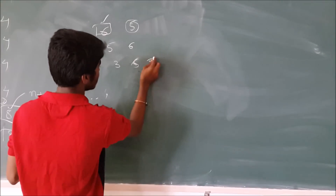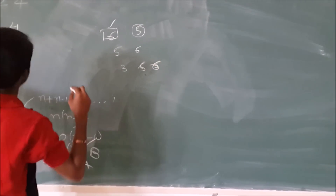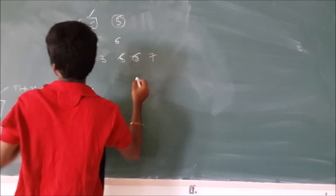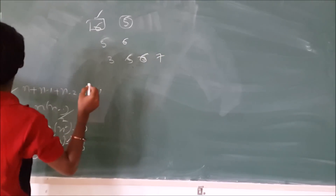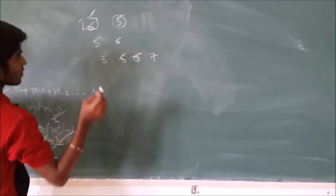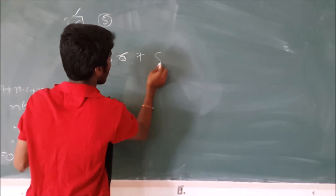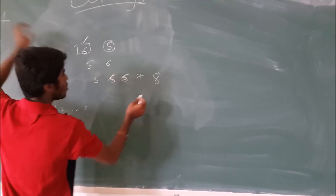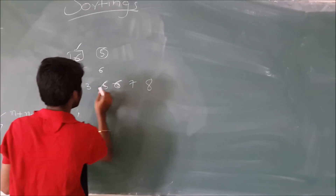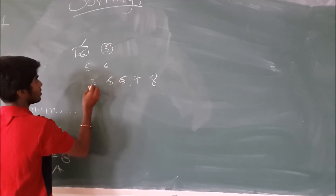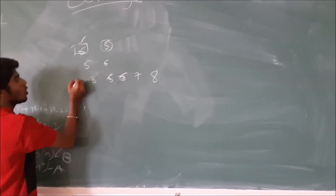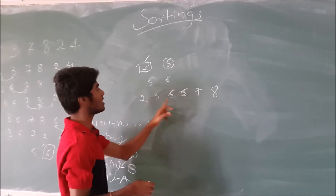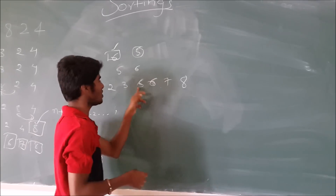So we get 3, 5, 6. Next we have 7 — 7 is greater than 3, 5, 6, so 7 stays in place. And we have 8 — 8 is also bigger than all of them, so it stays. And we have 2 — 2 is smaller, so 2 comes before 3. And we have 4 — 4 has to be settled in between 3 and 5.